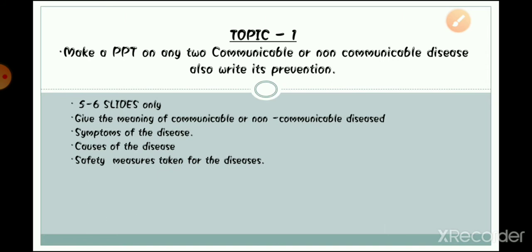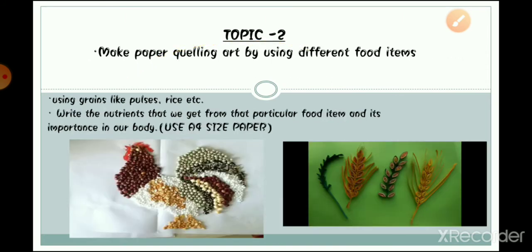The second topic is: make paper quilling art using different food grains. You can take an A4-size sheet or a chart paper cut to approximately A4 size. You can use different kinds of pulses, rice, and other grains to create your artwork.